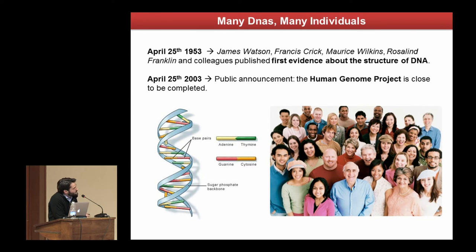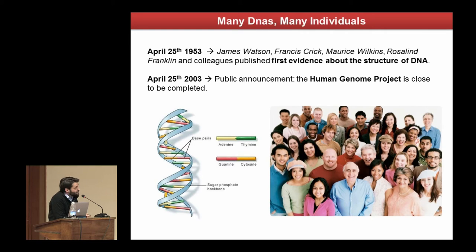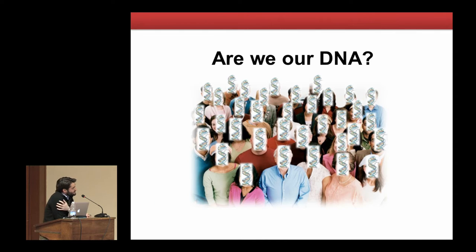There are a couple of milestone points in the history of this approach. In 1953, four scientists published the first evidence of the structure of DNA, and only 50 years after that, scientists contributed to mapping the entire human genome — to give an idea of why this complex pattern of molecules can explain individual variability in cognitive profile and pathological states.